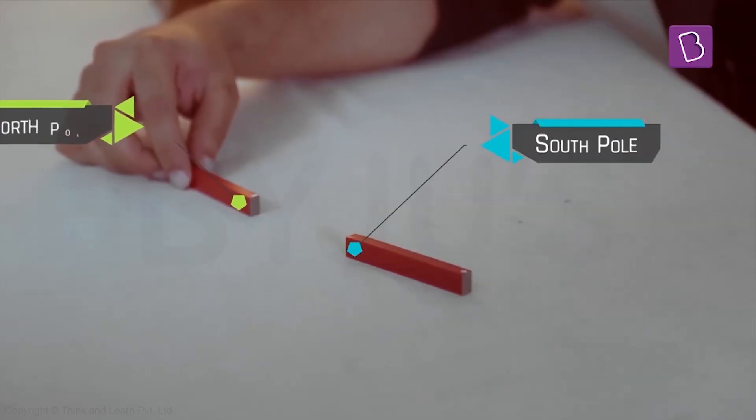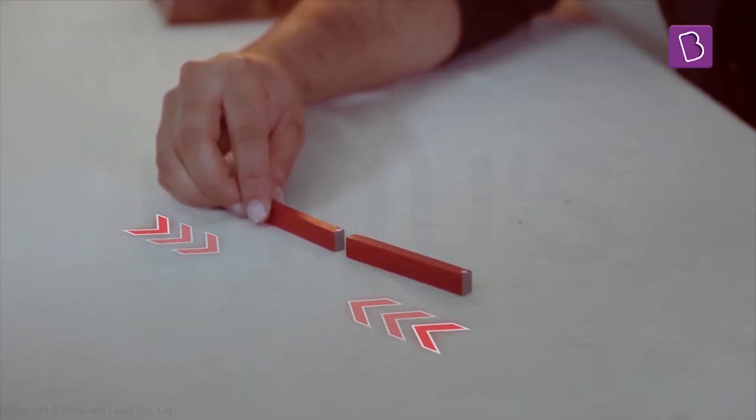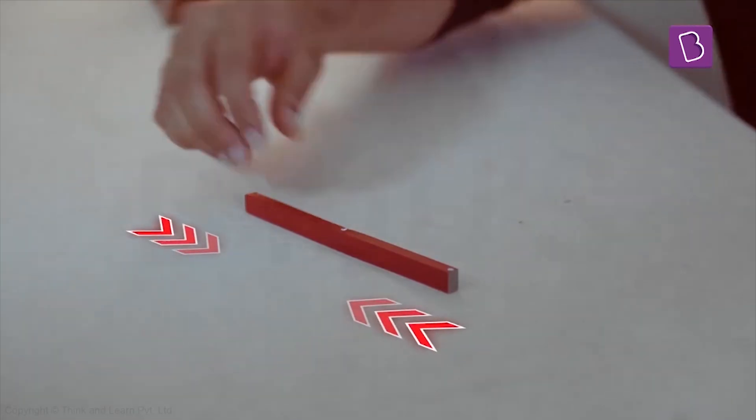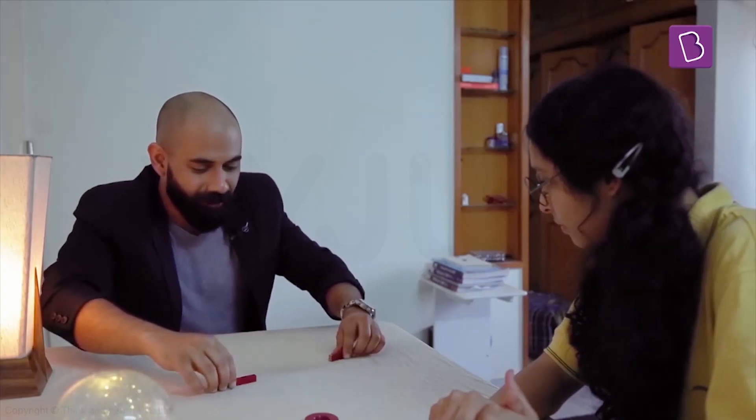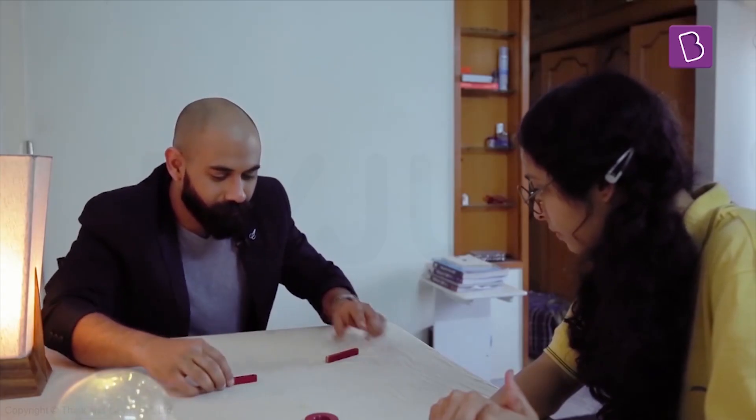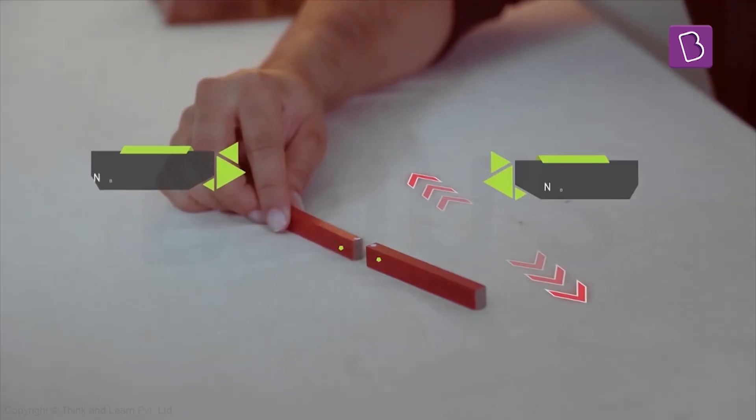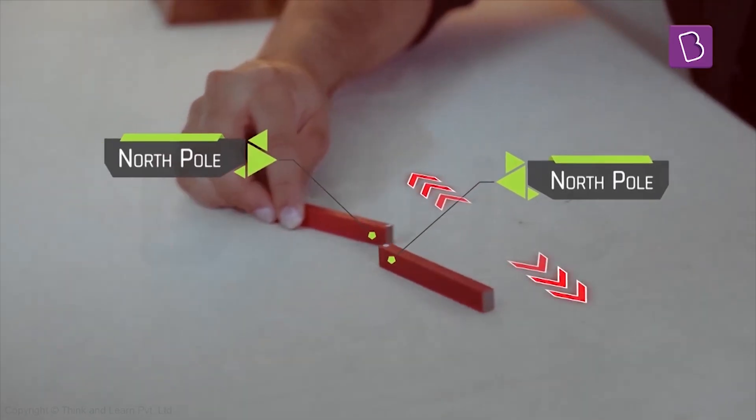Similarly, if I had a south pole here and a north pole here, they attract again. But when we take two like poles, that is say two north poles, they will repel each other. Yes. Like this. See that?